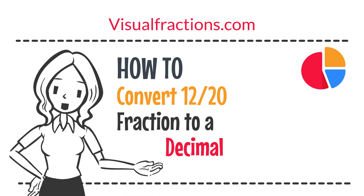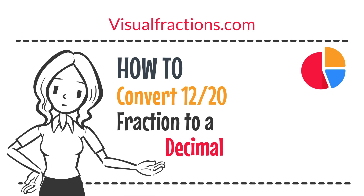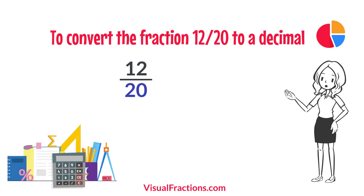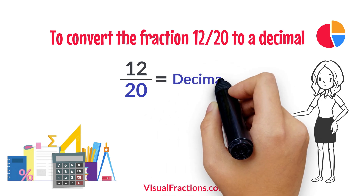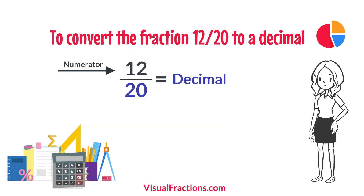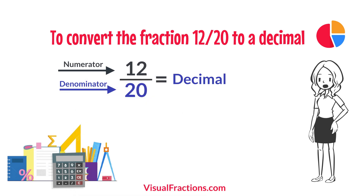Welcome to the Visual Fractions YouTube channel. Today, we're going to explore how to convert the fraction 12 twentieths to a decimal. To convert the fraction 12 twentieths to a decimal, all we need to do is divide the numerator, the top number, by the denominator, the bottom number. So, we simply divide 12 by 20.